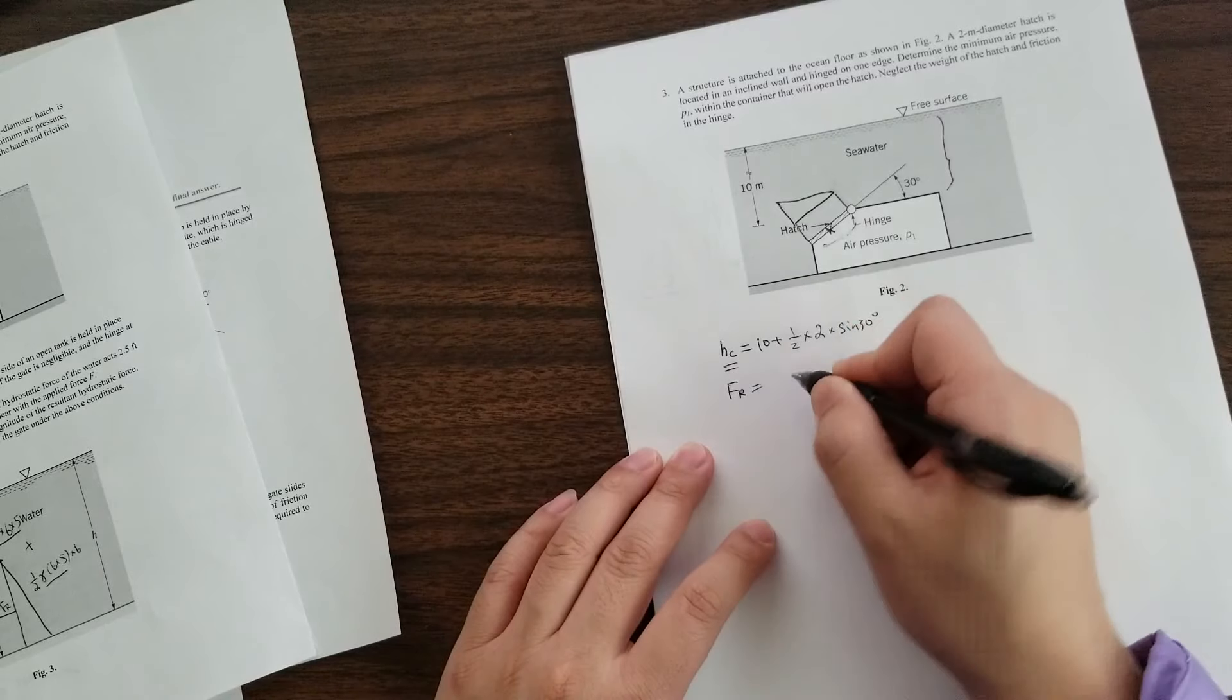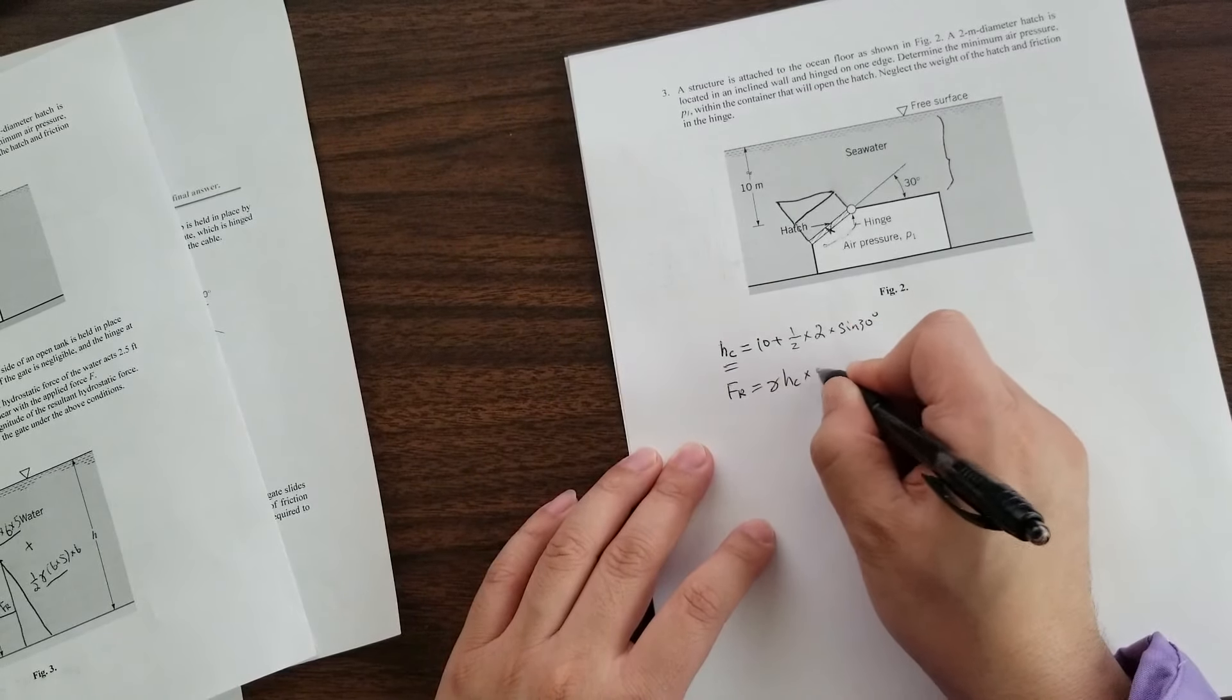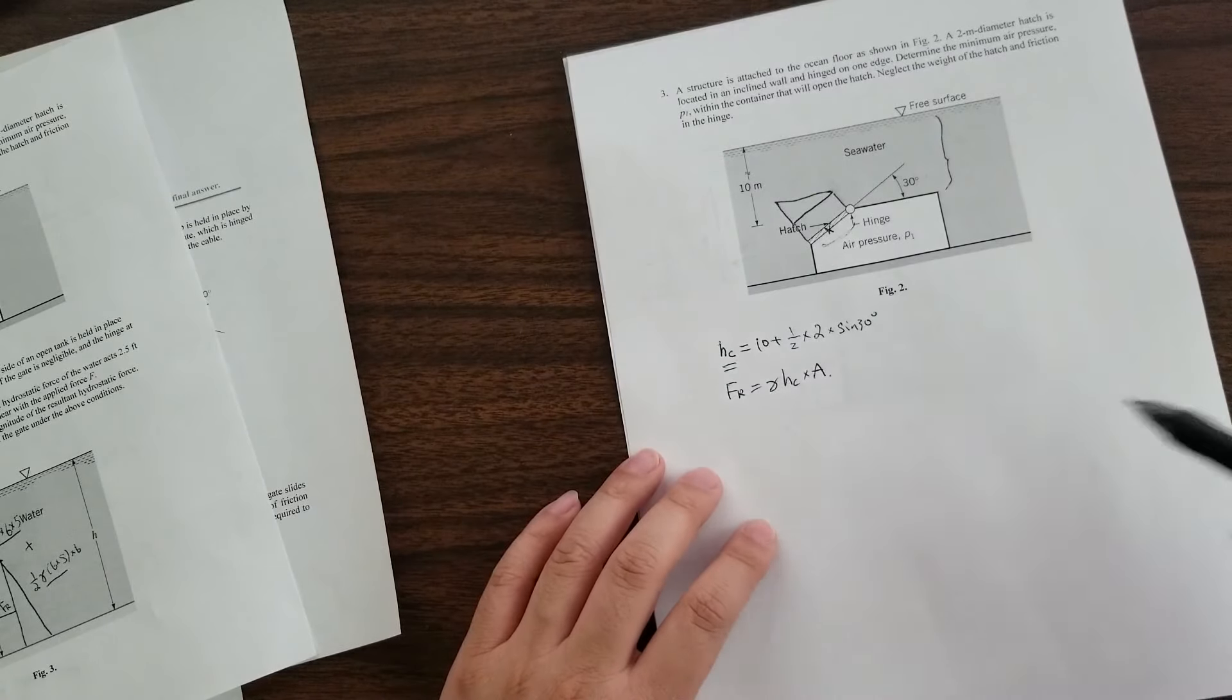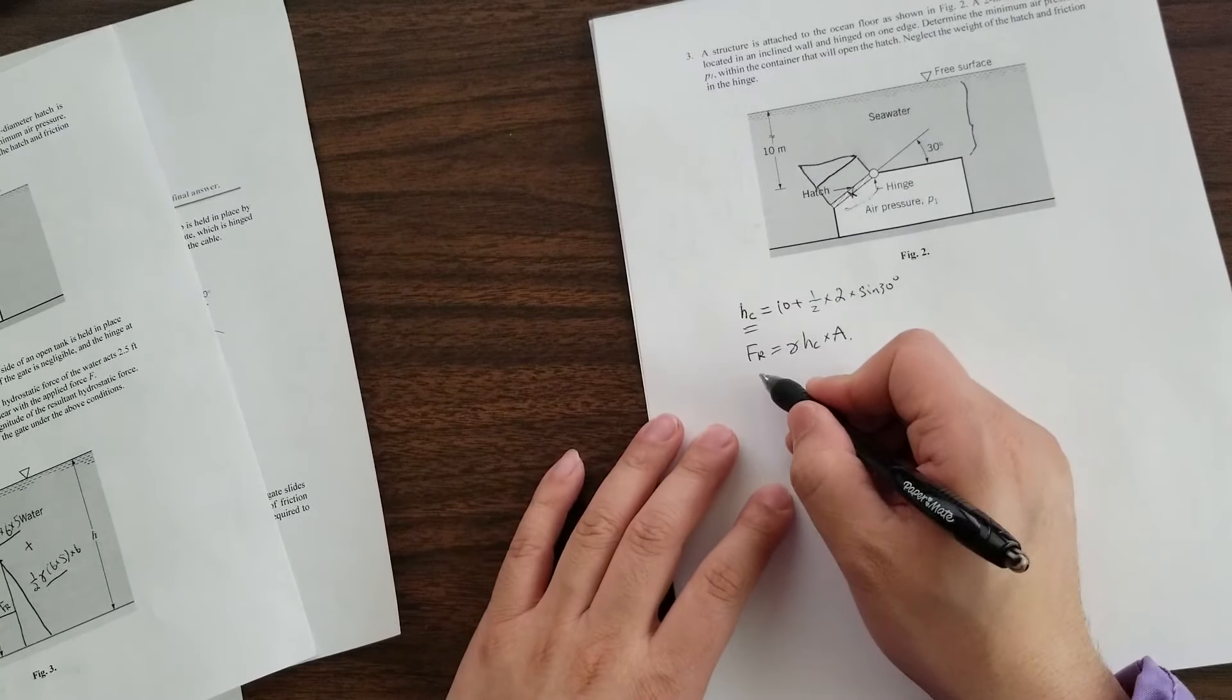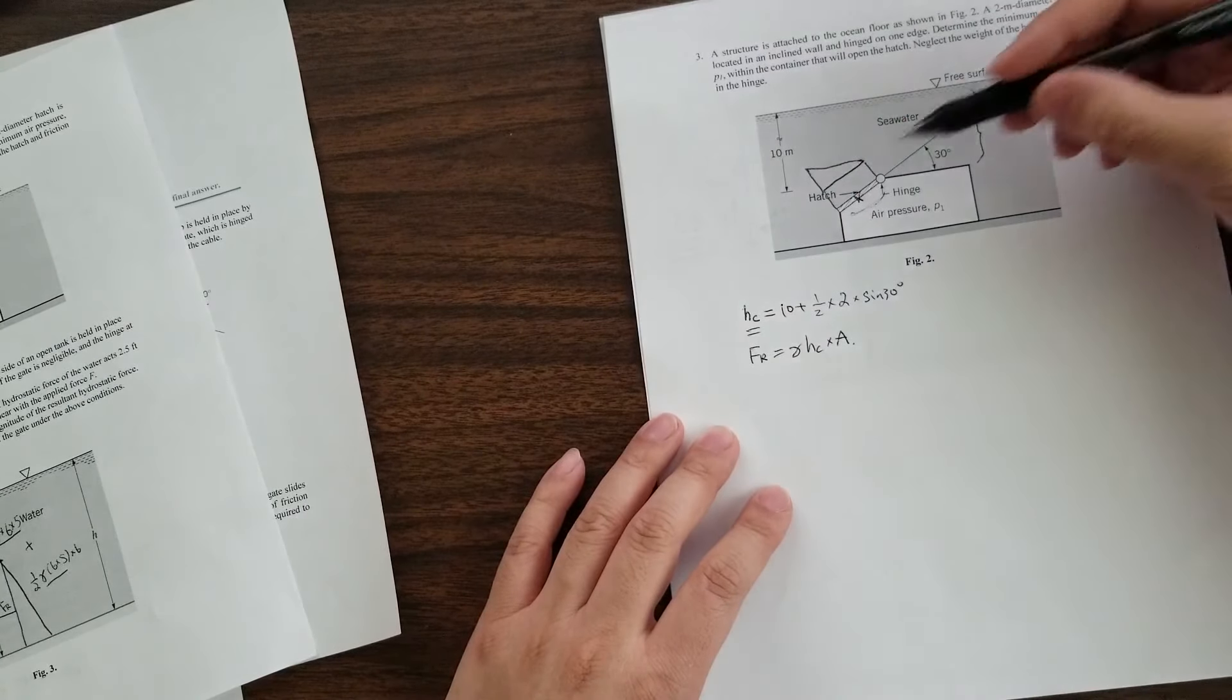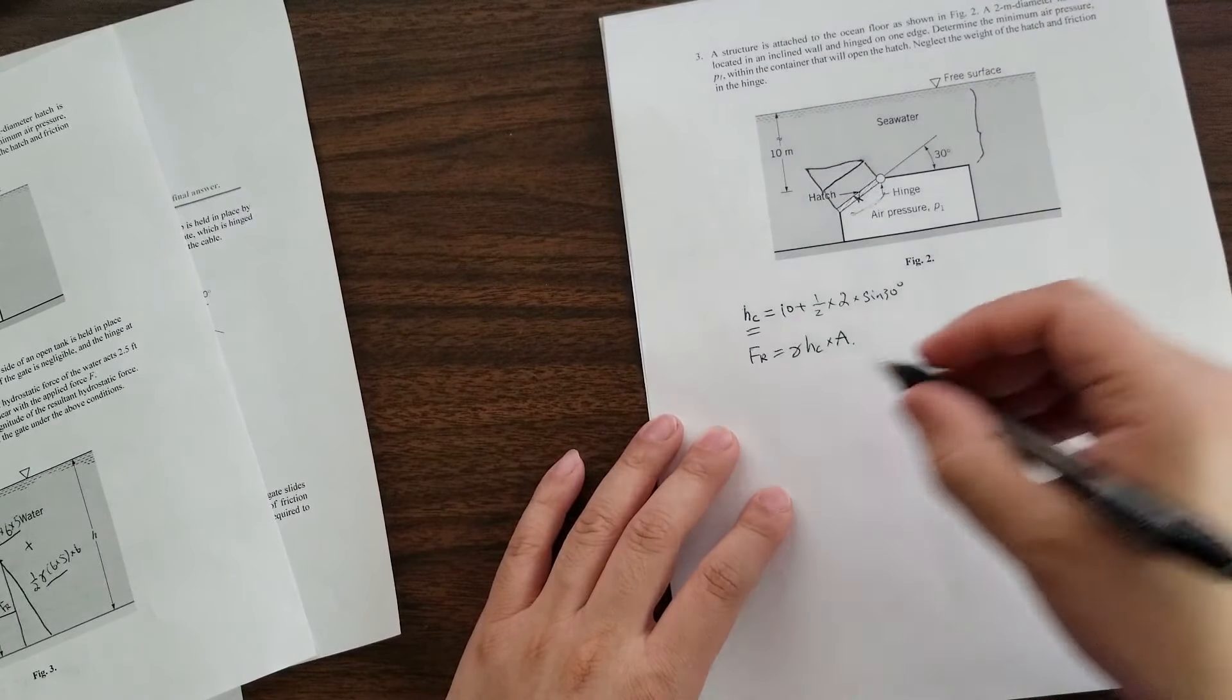you can calculate what the FR is. FR is essentially gamma HC times the area. Please don't mind my kids. Of course, now that you have this FR, we need to locate it.